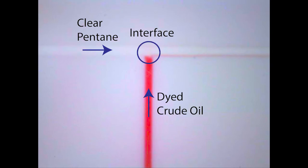Shown here is a magnified view of our microfluidic chip. We flow clear pentane in from the left hand side while red dyed oil enters from the bottom, forming an interface at the intersection of the two channels.